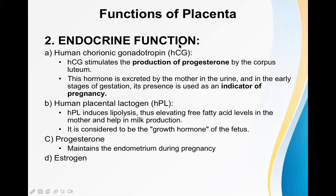HCG (human chorionic gonadotropin) stimulates the production of progesterone by the corpus luteum. In the second half of the menstrual cycle, after ovulation, the corpus luteum is formed. This corpus luteum must be maintained in early pregnancy, and that maintenance is done by HCG, because the corpus luteum produces progesterone.